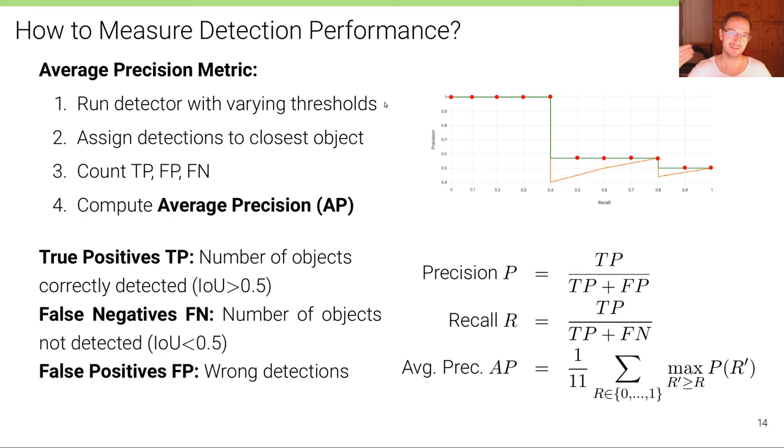So by varying the threshold of the detector, we can plot such a curve like the orange one. And as this curve is typically zigzaggy as shown here, we smooth it out a little bit by taking the maximum towards the right. So this is the green curve here. This is the maximum operator. We're taking the precision at a particular recall level and compute the max for all recalls that are larger than this recall level that we consider.